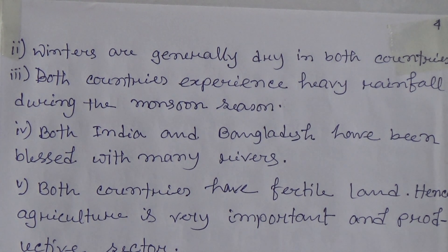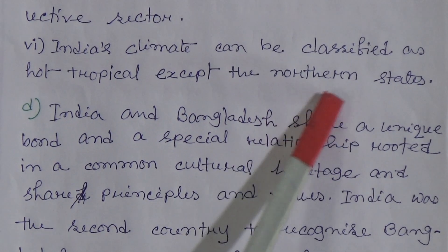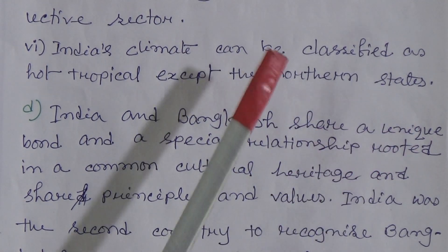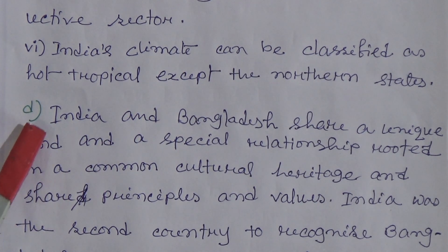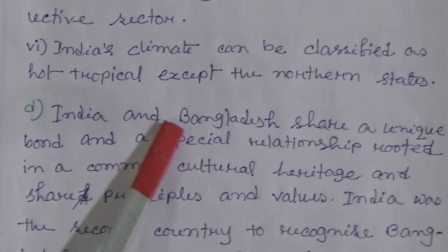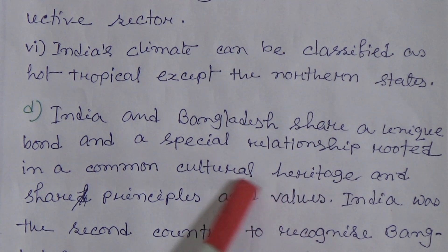Number five — both countries have fertile land, hence agriculture is a very important and productive sector. Number six — India's climate can be classified as hot tropical, except in the northern states.